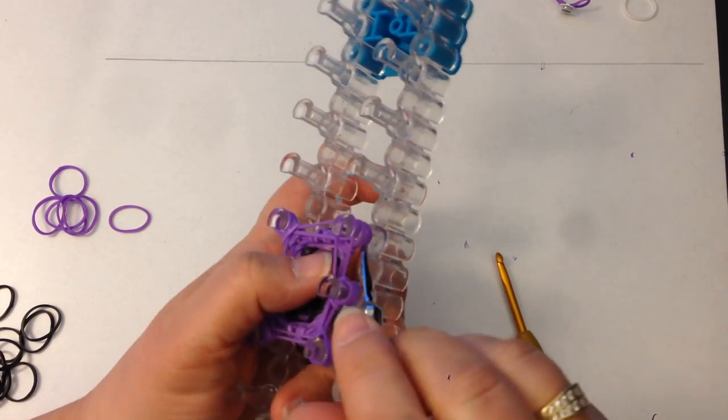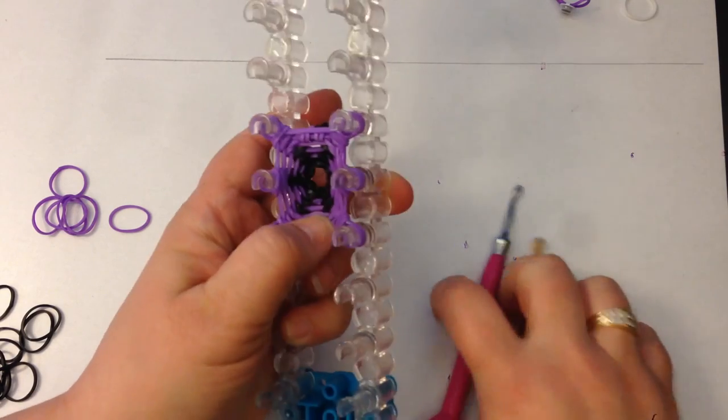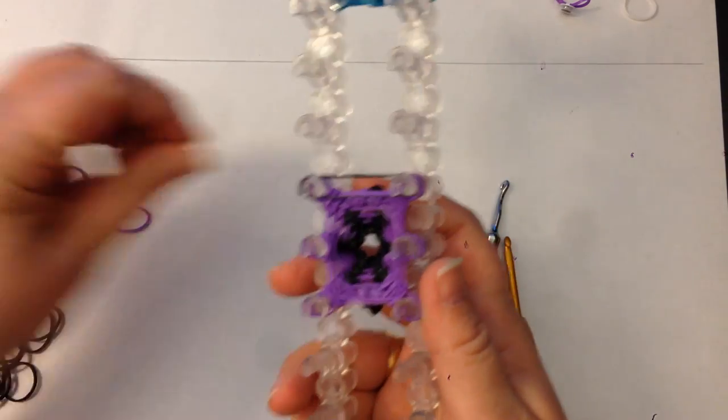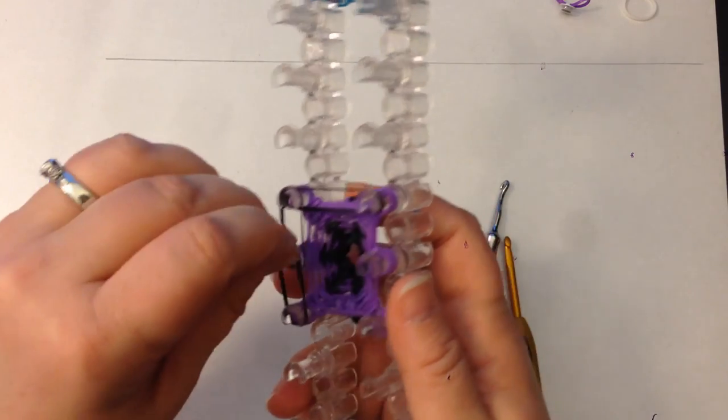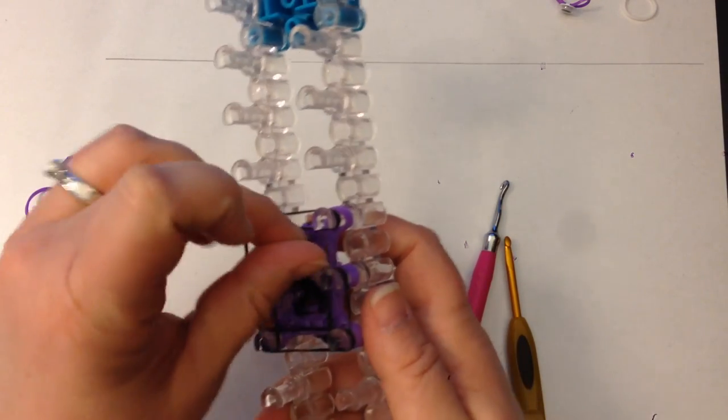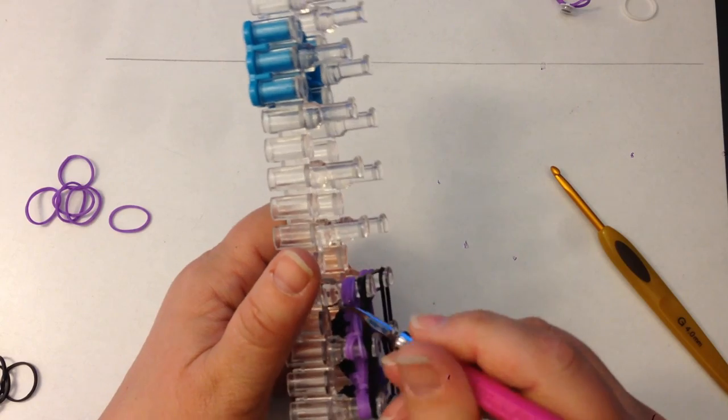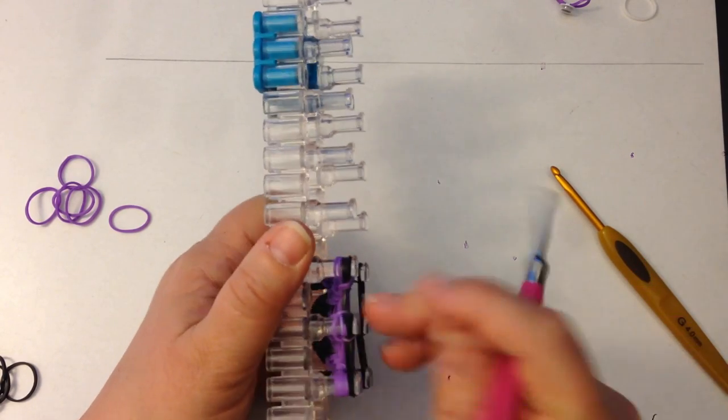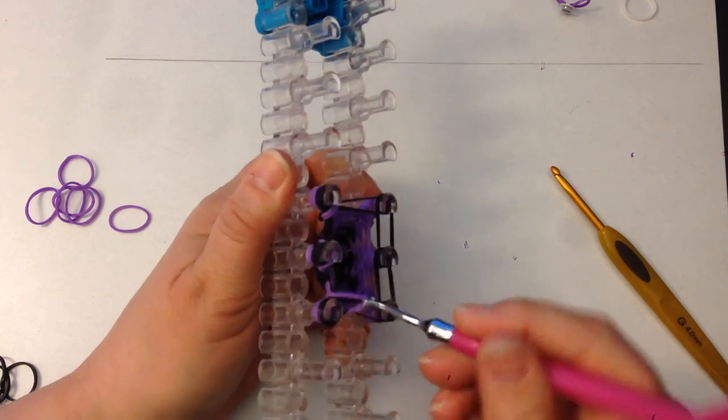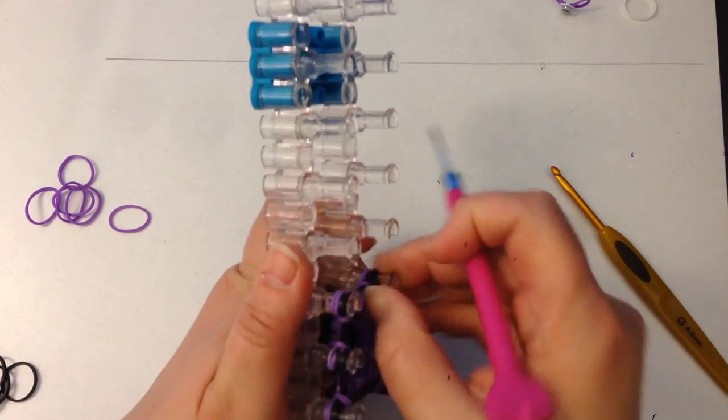Sometimes it's quite difficult if you've muddled up the order of placing the bands. Let's try and place them gently and in the right order. Okay so now row number nine is going to be black. Two bottom purple up and over.